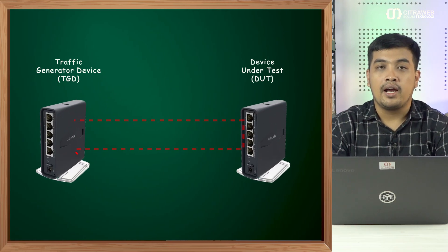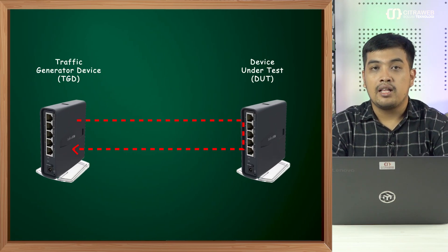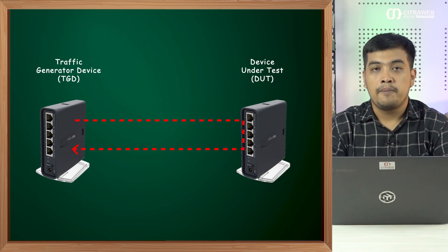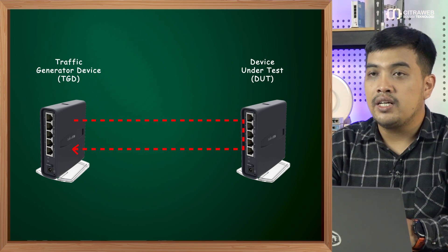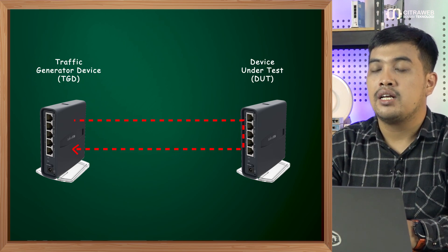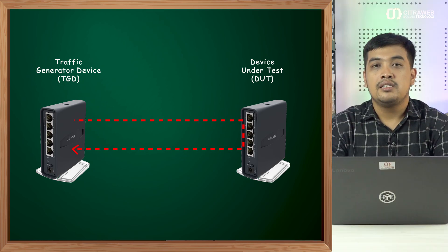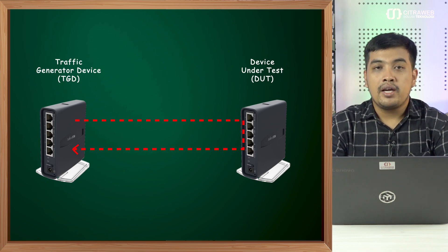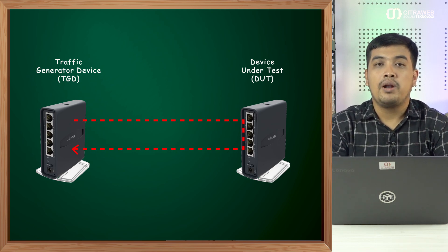Secara konsep, traffic generator ini akan dijalankan di satu mesin saja, kemudian untuk perangkat lawannya dia hanya akan dilewati trafficnya saja. Sebagai contoh, pada ilustrasi disini kita memiliki dua perangkat: yang satu sebagai TGD atau traffic generator device dan yang satunya lagi sebagai DUT atau device under test. Secara traffic, konsepnya dari traffic generator device akan mengalirkan traffic ke device under test dan trafficnya akan kembali lagi ke traffic generator device. Jadi perangkat device under test tidak perlu melakukan konfigurasi.